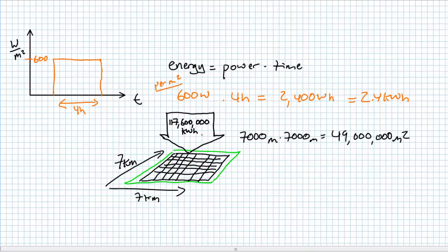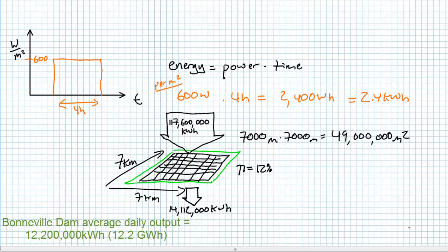Even if the solar panels only had a 12% efficiency, the energy yield of this island would be 14,112,000 kilowatt hours every single day. This single solar island rivals the average daily output of Bonneville Dam on the Columbia River power system, even though it's only working four hours a day at less than optimal conditions.